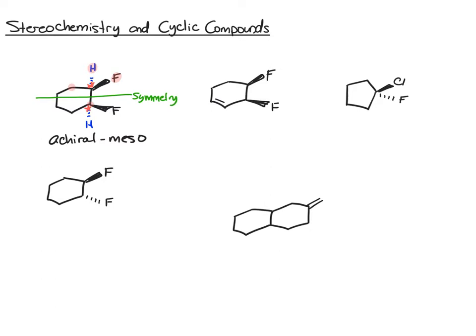Now compare that to the molecule below. The only difference is that the bottom fluorine is pointing back. You would still say these carbons are chiral centers, but if you try to draw a symmetry plane, one fluorine is above the plane and the other is below — they're not directly mirroring one another. For that reason there isn't a symmetry plane, and this molecule is chiral. Also keep in mind that rings are like double bonds because they lock these groups in place.